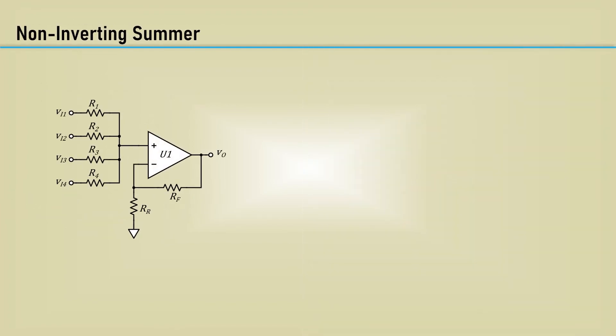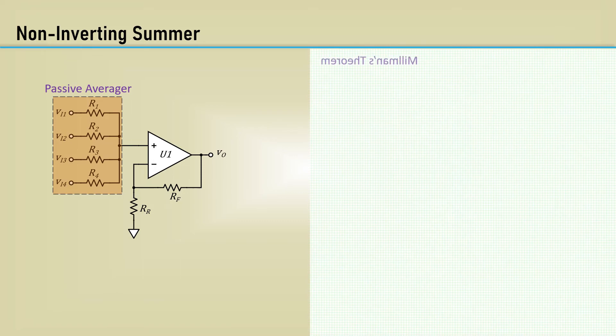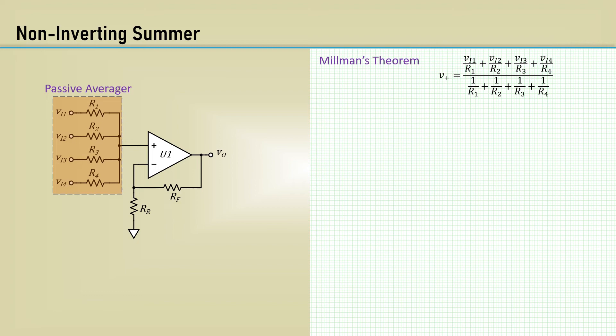Let's now look at how the op-amp can be used as a summer. The non-inverting summer is nothing more than a buffered passive averager. It's handy to use Millman's theorem for this. Here's the equation for the voltage at the non-inverting input, V+. It's the sum of the currents divided by the sum of the conductances. If you make weighting uniform across the inputs and make all four input resistors the same, you simply get the sum of the input voltages divided by four. We now add the gain of the non-inverting buffer.